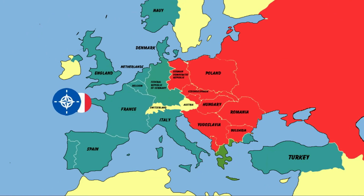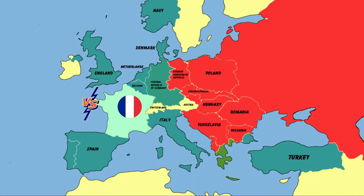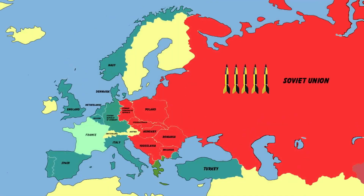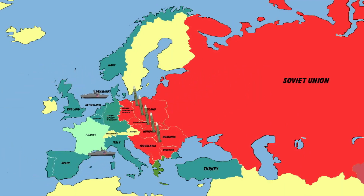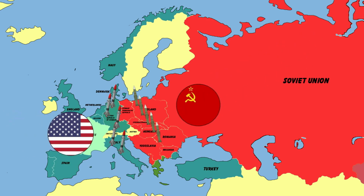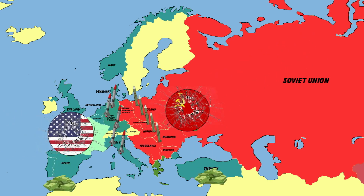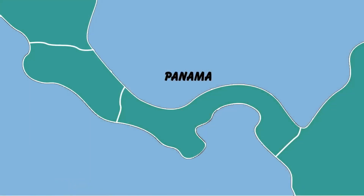In Europe, France left NATO because of conflicts with the U.S. The Soviet Union upgraded its missile system and aimed directly at Western Europe, prompting the United States to install more missiles in response, creating a missile race in Europe. The Cold War now cost both superpowers a great deal of resources, but neither side withdrew.